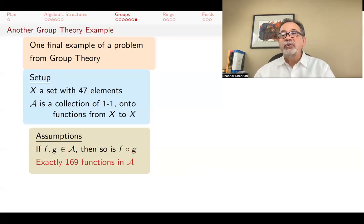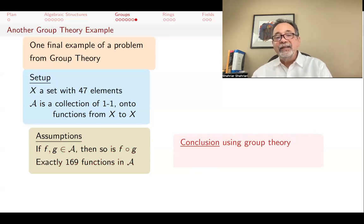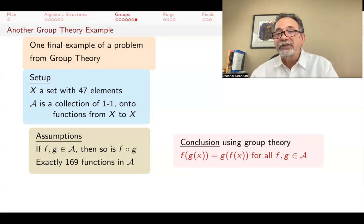And you also know that the number of functions that you have, the number of bijections you have is 169. Then conclusion you can get using group theory, and this is amazing that you can prove this, is that f of g of x is g of f of x for all functions in your collection. That it doesn't matter which way you compose the functions, you will always get the same thing. That's unusual.